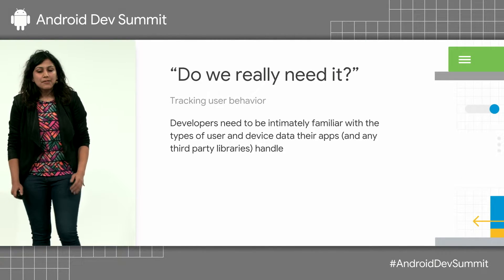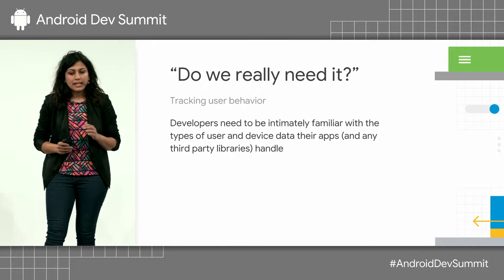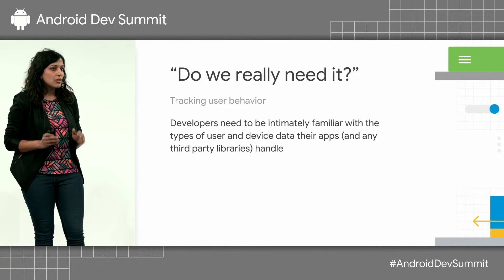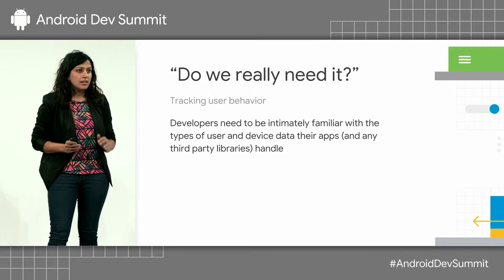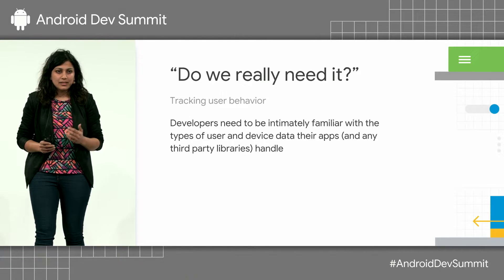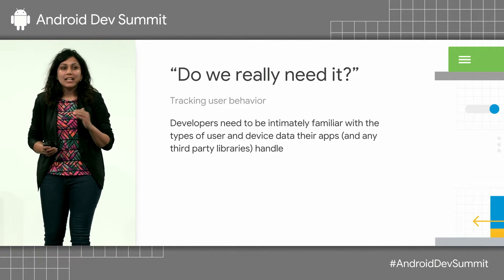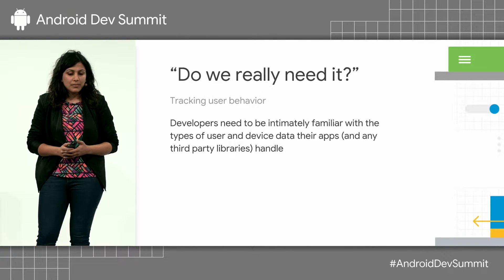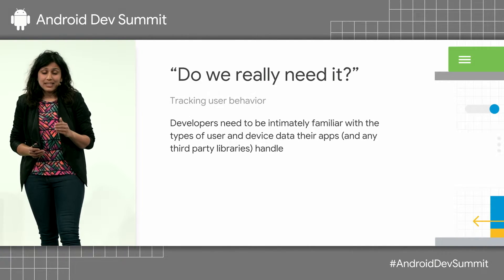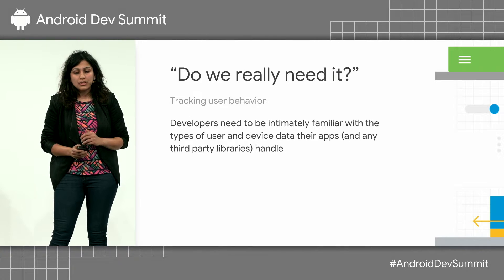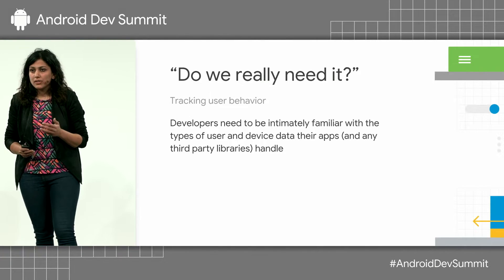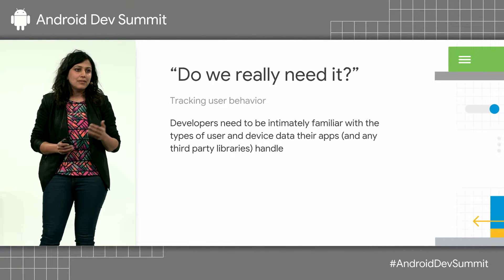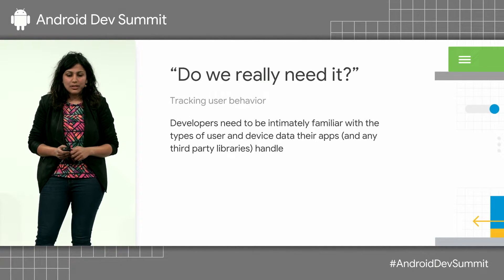For example, if you have a request to collect a certain bit of information about a user from their device, a question always worth asking is: do we really need it? How do you plan to use it? And are we still using it in the case of historical data collection? It is not uncommon for certain information about a user to be collected in the guise of behavioral analytics, which is actually never used and is sometimes abandoned altogether.